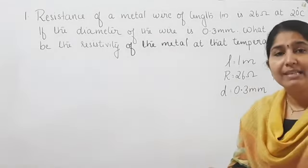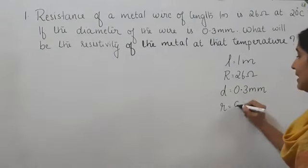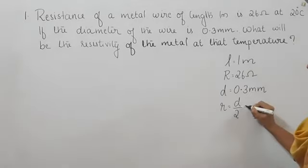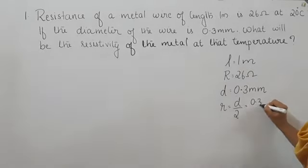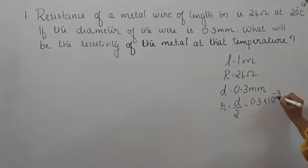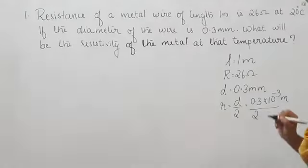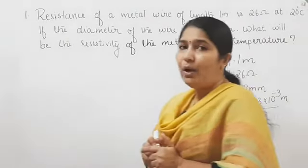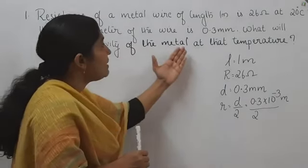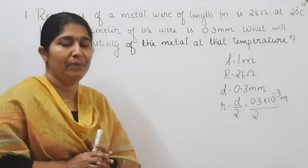Then what about the radius? Radius R is equal to diameter divided by 2, that is 0.3 millimeter. Since 1 millimeter is equal to 10 raise to minus 3 meter, we divide by 2. We want to find out the resistivity of the metal at that temperature.